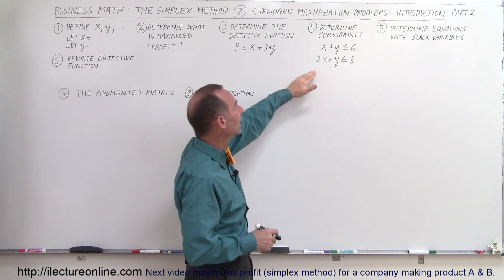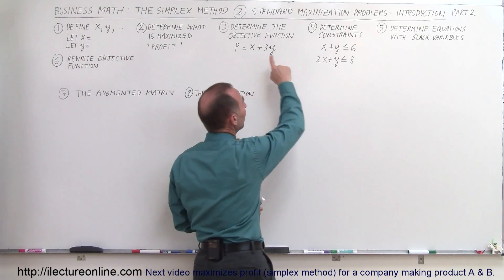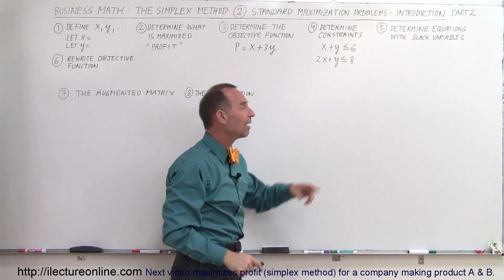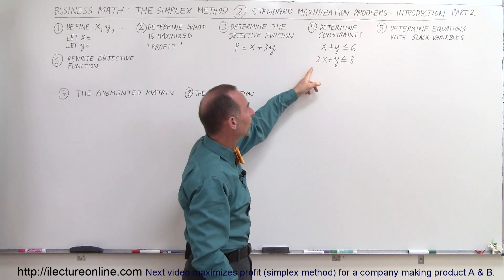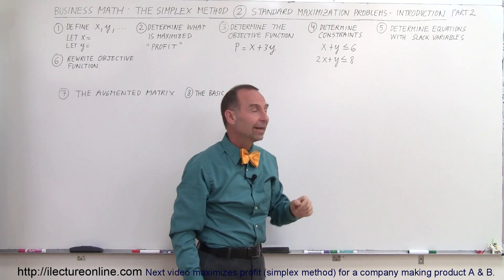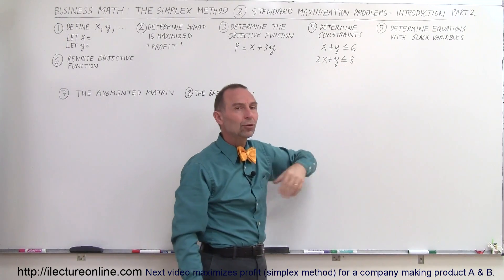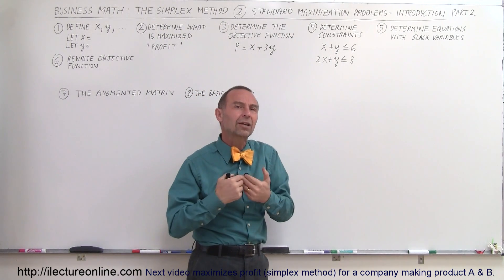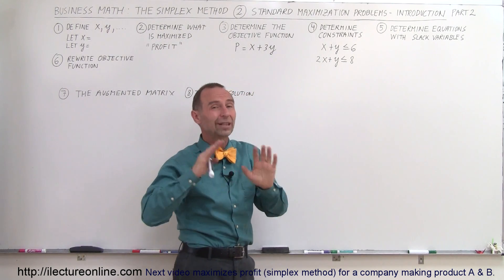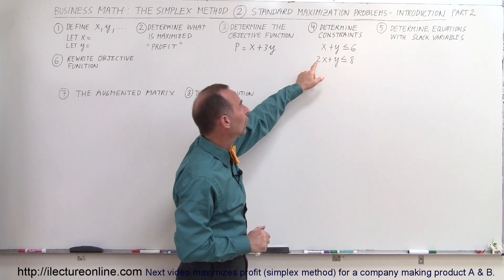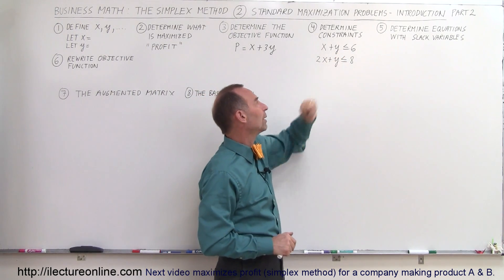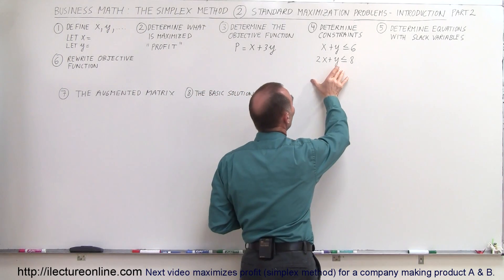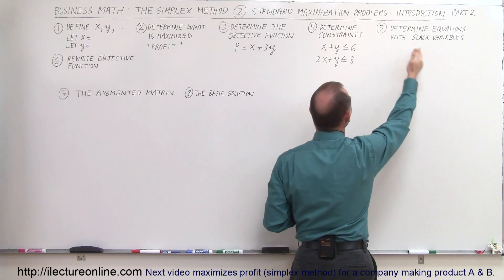There are usually some constraints, and for a maximization problem they should always say less than or equal to some number. Here we have x plus y is less than or equal to 6, and 2x plus y is less than or equal to 8. If the constraints say greater than, you're dealing with a minimization problem. Here both constraints use less than or equal to, so this is a standard maximization problem. We then turn these inequalities into equations by adding slack variables.